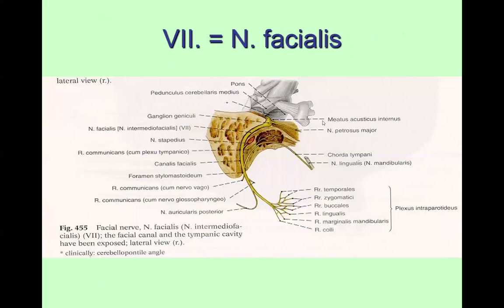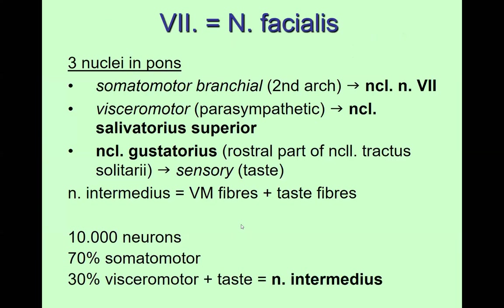Let's start with the facial nerve. The facial nerve supplies facial or mimetic muscles, but before doing so it must pass through a very complicated course within the petrous part of the temporal bone, quite close to the tympanic cavity. Which modalities or nuclei do we have for the facial nerve?